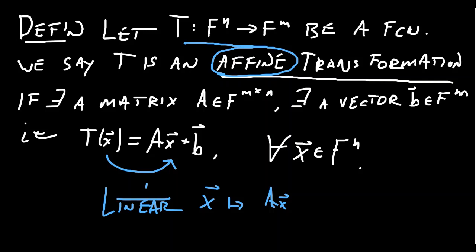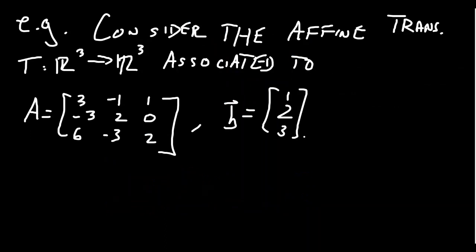How do you get something affine? You just add on this extra translation vector. In general, your affine map won't be linear if the translation is non-zero, but an affine map is linear if and only if the translation is zero. Let's look at an example: consider the affine transformation from R3 to R3 associated to a matrix A and translation vector B. Let's take the image of the vector 2, 0, negative 1.